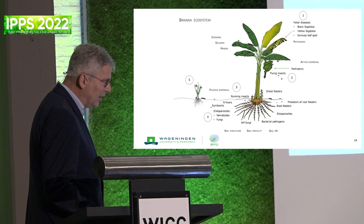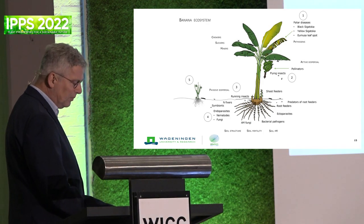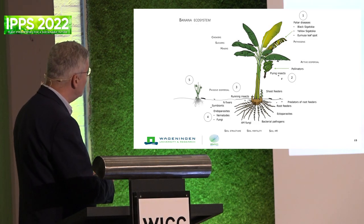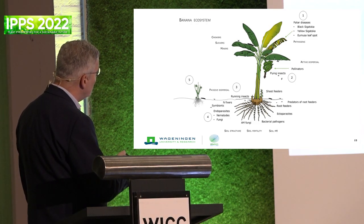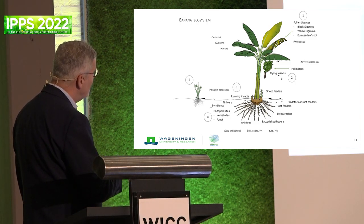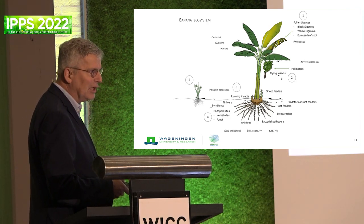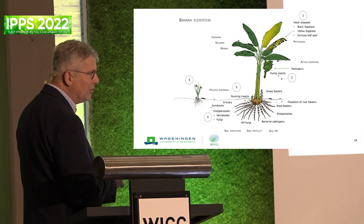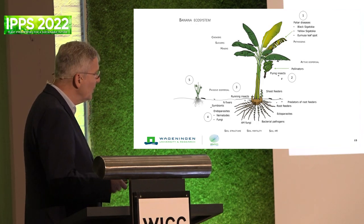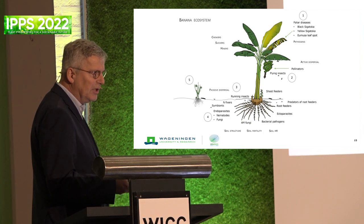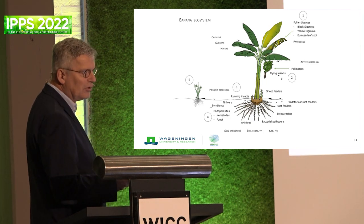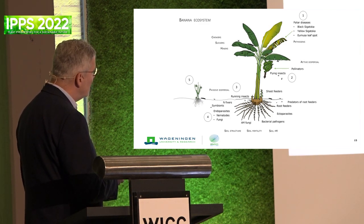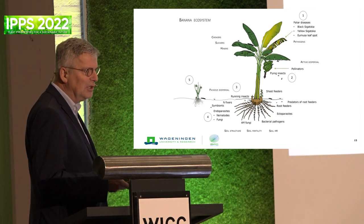Now switching gears to banana - this is a perennial crop, an entirely different story. The banana itself is an ecosystem: you see all the bugs, fungi, and bacteria that are threatening each and every banana plant. These plants produce a bunch every nine months. Many plantations have about 2,000 plants per hectare, and many plantations are there for at least 10 years. This is not an annual crop.